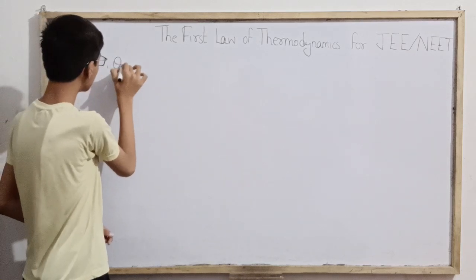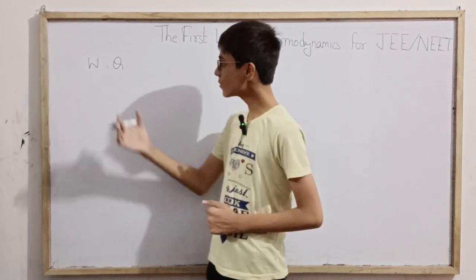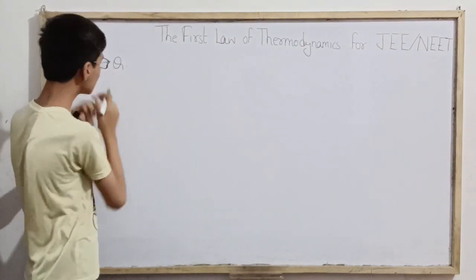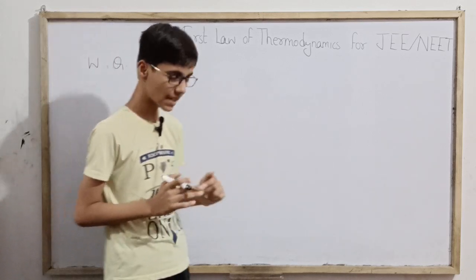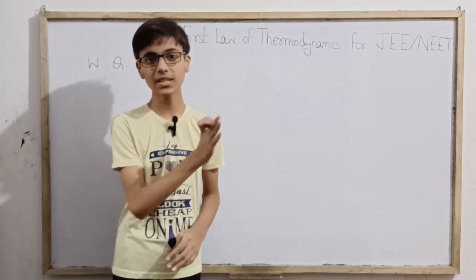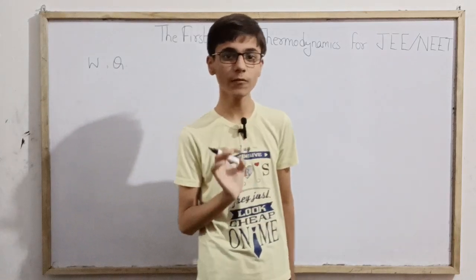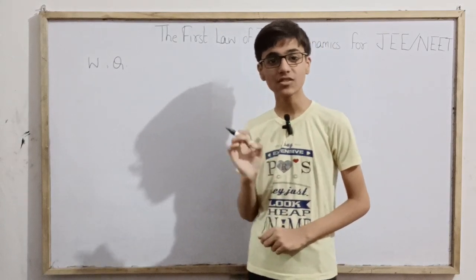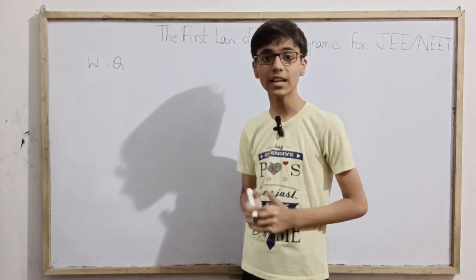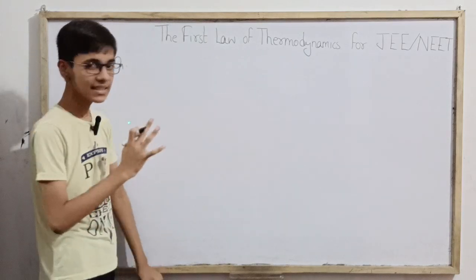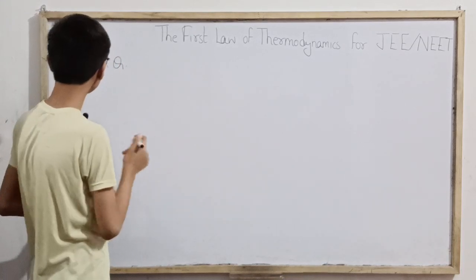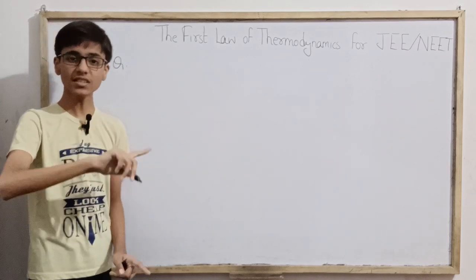Here we have two main quantities. From our previous study of mechanics, we know that W is the work done. In thermodynamics, in any thermodynamic state change or process, the thermodynamic system can either take heat energy from its surroundings or give heat energy to its surroundings, and it can also do work on the surroundings. Remember, W is not the work done on the thermodynamic system.